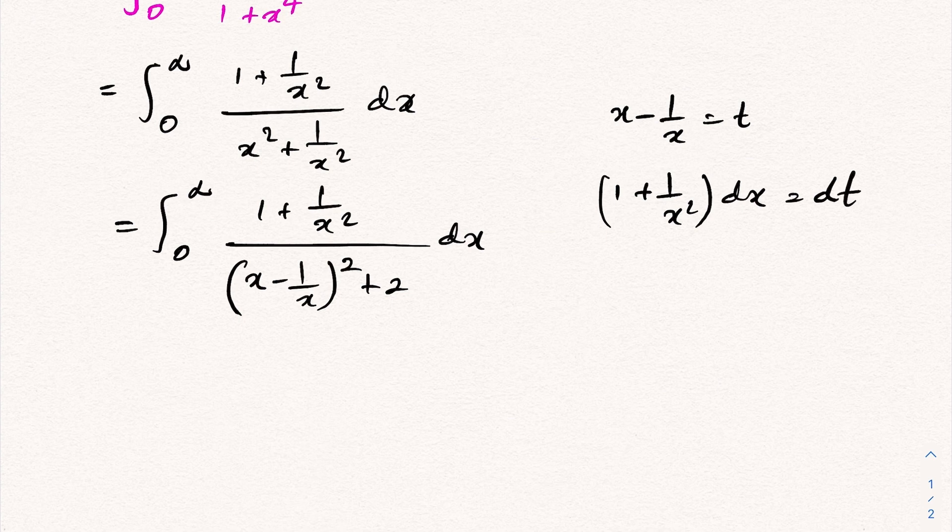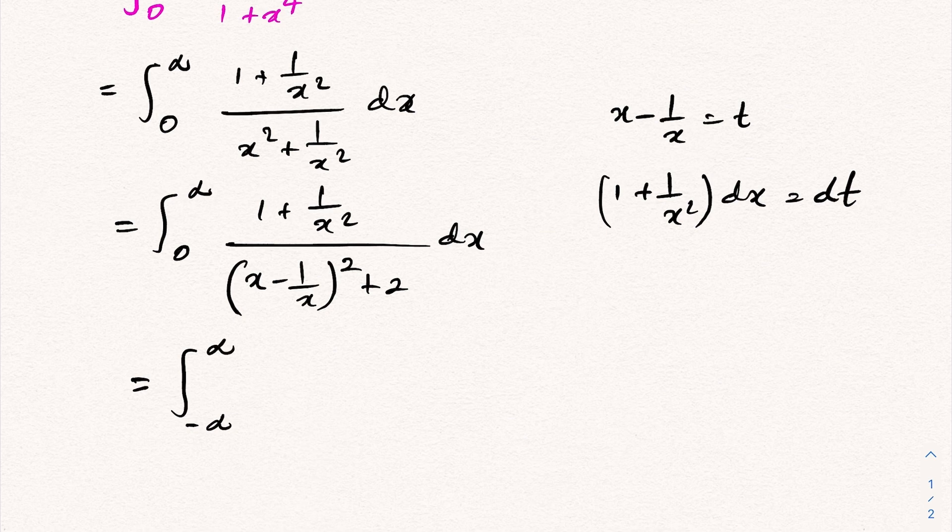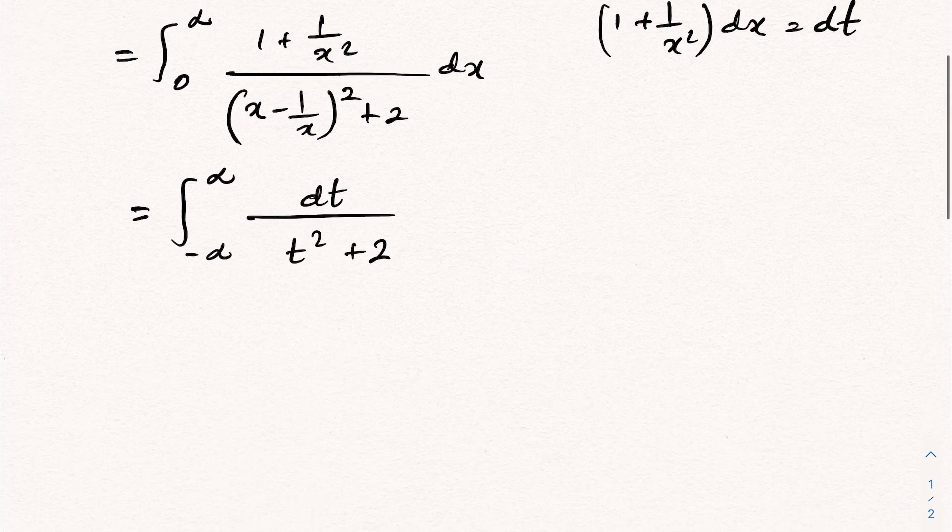We can plug in now. The limit changes from minus infinity to infinity. Then 1 plus 1 over x square dx becomes dt over t square plus 2. This integral we know is arctangent.